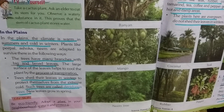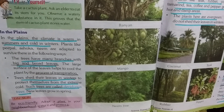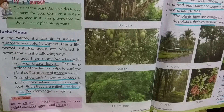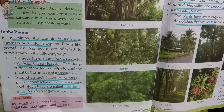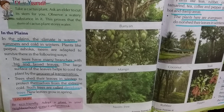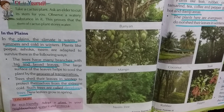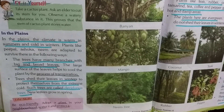Number 1: The trees have many branches with big and broad leaves. The large surface of the leaves helps to cool the plant by the process of transpiration. Number 2: Trees shed their leaves in winters to protect themselves from the extreme cold.